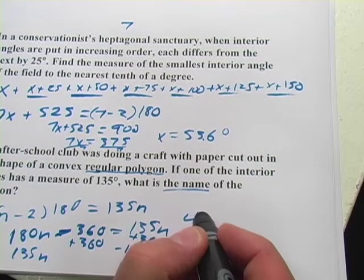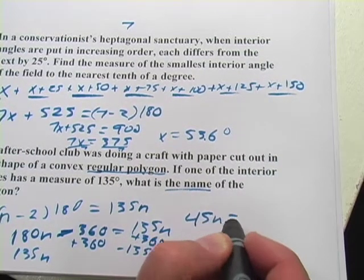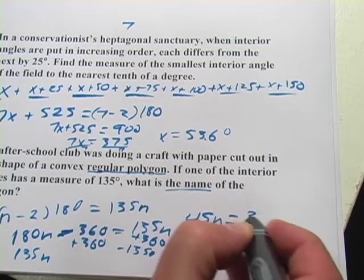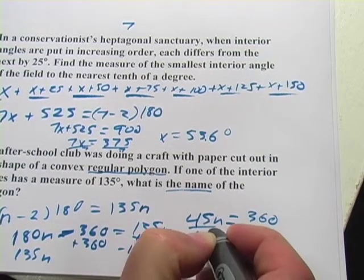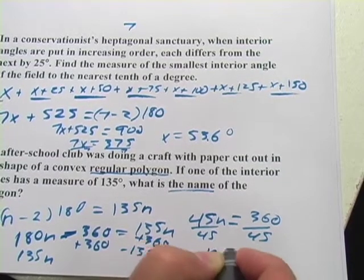We'd end up with 45n equals 360. And then we divide by 45. And I think you're going to get n equals 8.